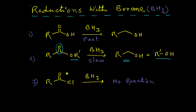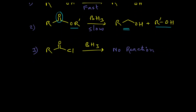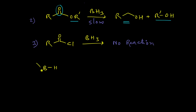We will discuss the reason behind this. Borane is a highly electron-deficient species; its electron deficiency comes from the vacant 2p orbital of the central boron atom, and that is why it always behaves as a Lewis acid. During the reductions, boron will look for any Lewis basic centers present in the reacting molecules.